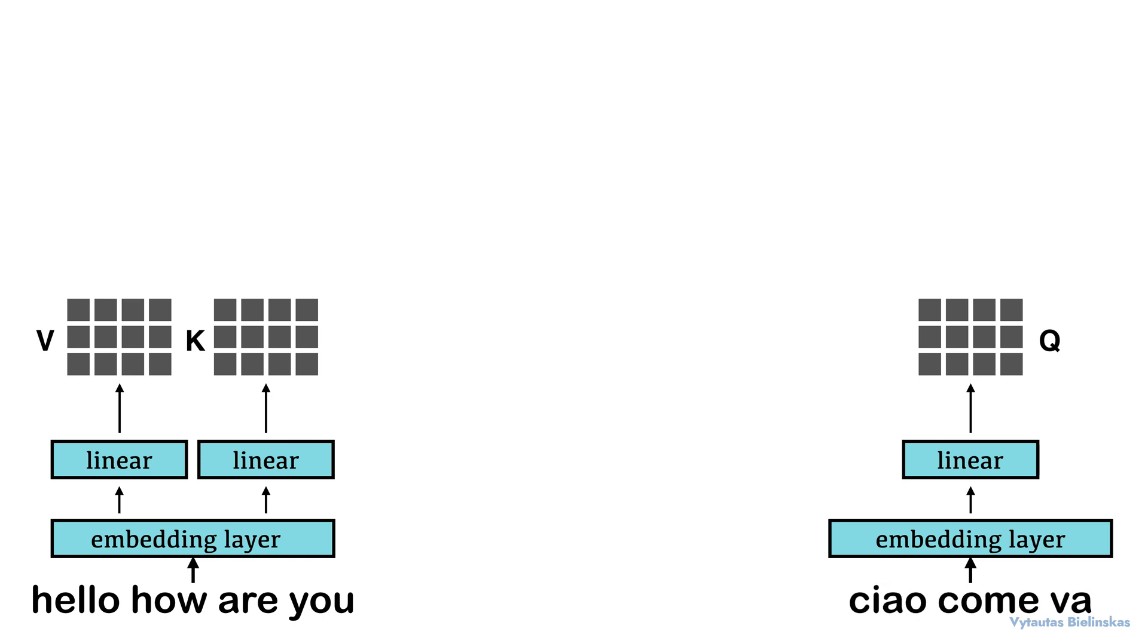In this case we have our decoder on the right and encoder here on the left. The first thing that we are doing here is the encoder part. We're embedding our English text using this embedding layer and then we are passing this to the separate linear layers.